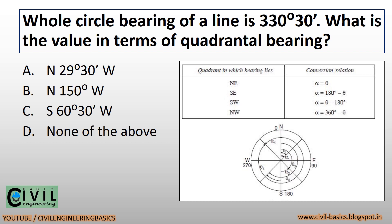Whole circle bearing of a line is 330 degrees. What is the value in terms of quadrantal bearing? The quadrantal bearing will be North 29 degrees 30 minutes West.